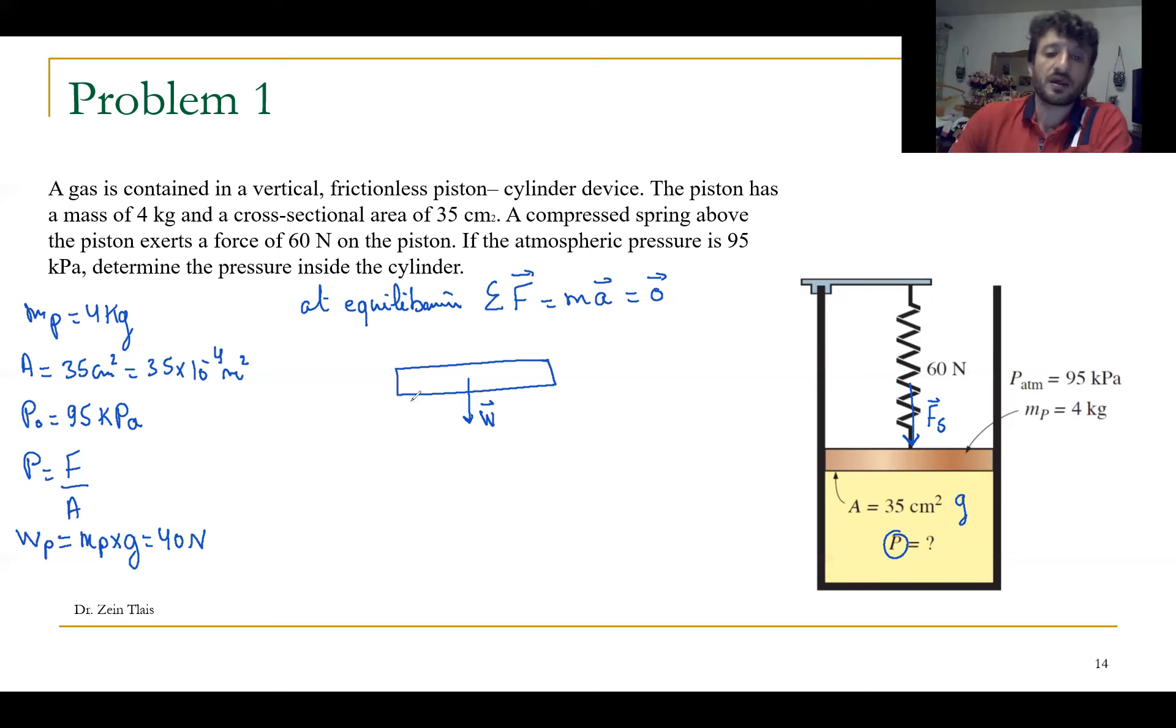We have the force applied by P0. We can say F0. We have the force applied by the spring equals to Fs. And we have the force applied by the internal gas up. We have F of the gas.